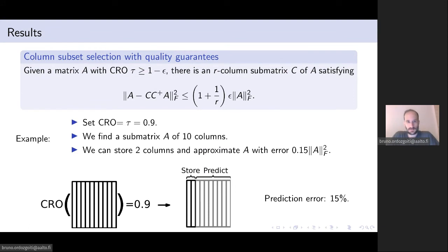Finding CRO subsets is useful for other tasks such as feature selection with quality guarantees by means of column subset selection. More specifically, given a matrix with CRO at least 1 minus epsilon, we can show that there is a submatrix of A comprised of R columns which satisfies this inequality.